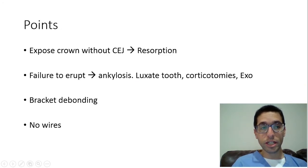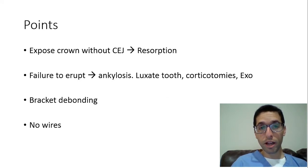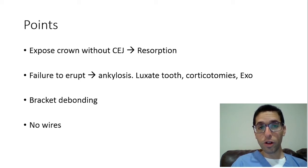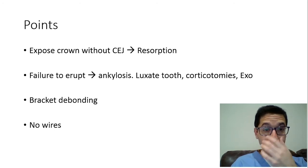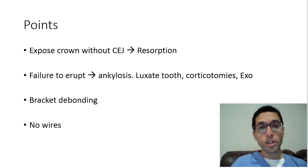When exposing, you want to expose the crown enough to get a bracket on — you don't need to be overly aggressive and show all of the crown. Usually removing the follicle gives adequate space for the bracket. Be very careful not to be too aggressive and expose the CEJ, because if you do, that can cause external resorption.